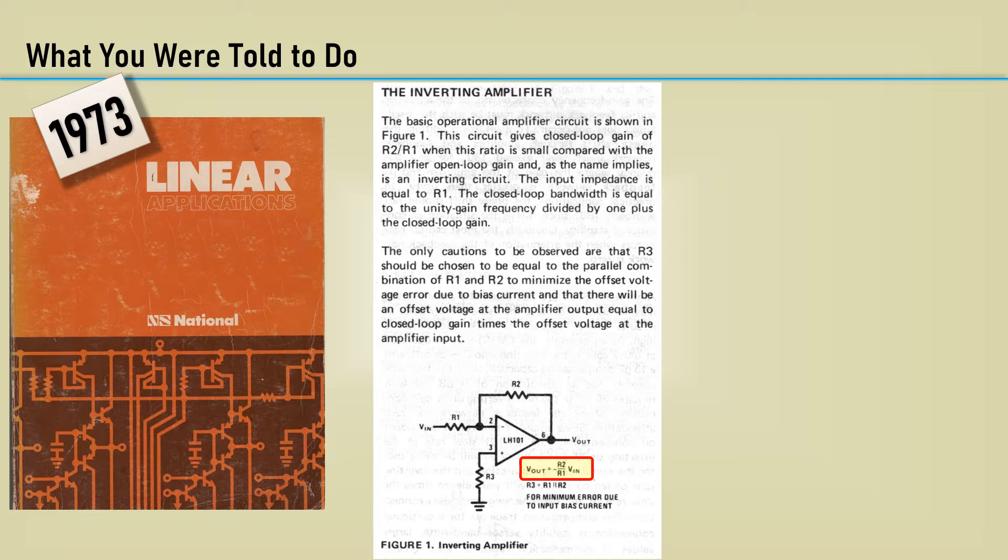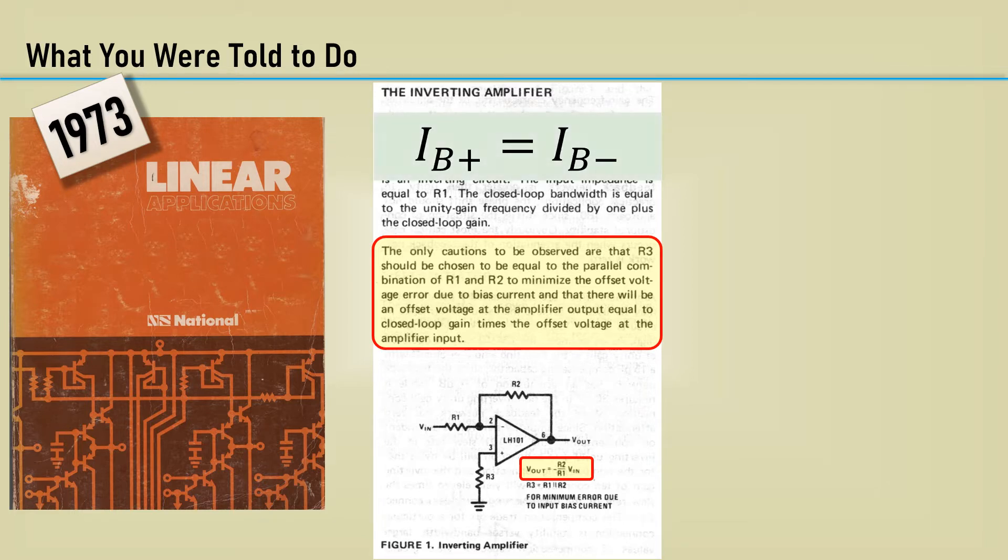But read this along with me. The only cautions to be observed are that R3 should be chosen to be equal to the parallel combination of R1 and R2 to minimize the offset voltage error due to bias current and that there will be an offset at the amplifier output equal to the closed loop gain times the offset voltage at the amplifier input. Well, this makes a bold assumption that the input bias current for the non-inverting input equals that of the inverting input. The addition of a calculated R3 creates a voltage drop due to the input bias current due to the non-inverting input that is assumed to be equal to the inverting input. This nullifies the effect of the input bias current.